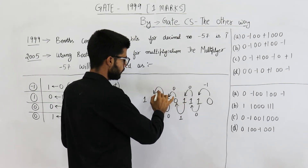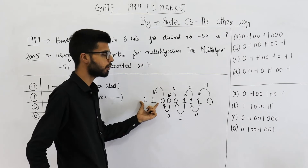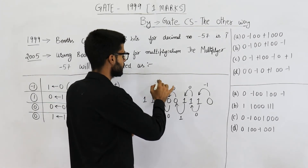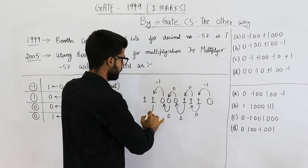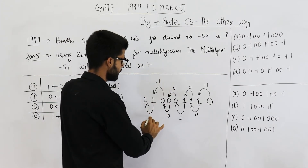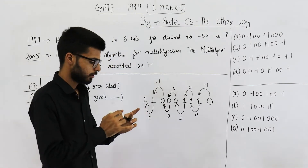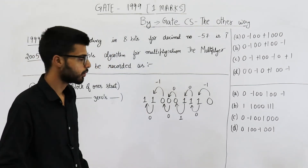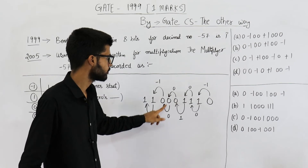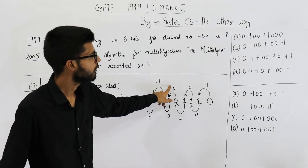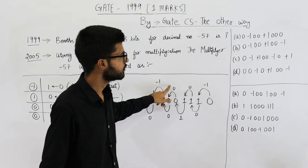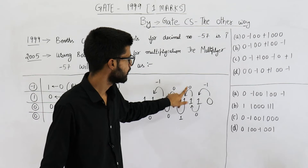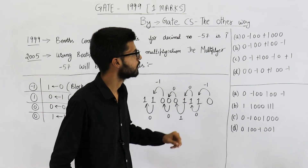Now from here a block of 1's is again beginning — output minus 1. No change, so output 0. So the full Booth's encoding is: 0, minus 1, 0, 0, 0, minus 1, double 0, plus 1, double 0, minus 1.